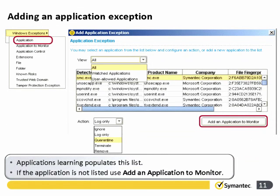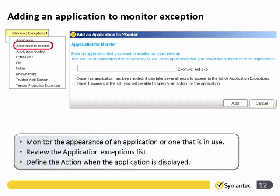Let's have a look at the Windows exceptions. We could add them in from the applications that are being gathered by the SEPM — this will rely on you having Application Learning turned on. We can select them from our query list and choose to add them as an application to monitor directly from here, and we can choose the action to take. If we don't have Application Learning turned on, we could manually add in the application to monitor.